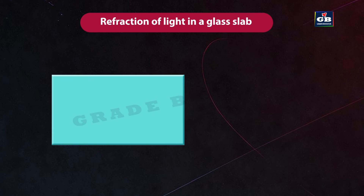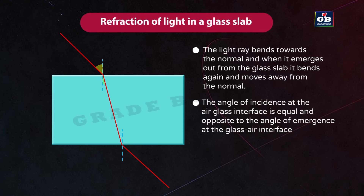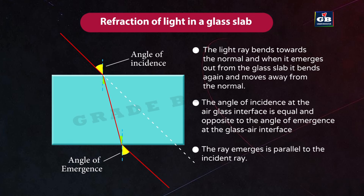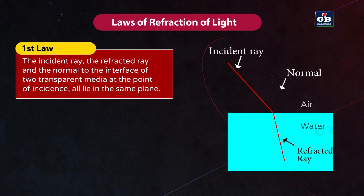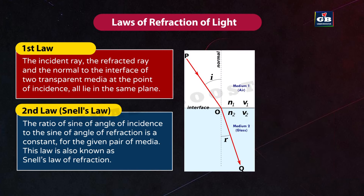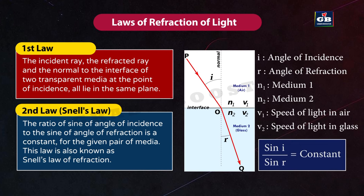Refraction through a rectangular glass slab: when a light ray passes obliquely through one side, it bends towards the normal; when it emerges from the other side, it bends away from the normal. The angle of incidence at the air-glass interface equals the angle of emergence at the glass-air interface, so the emergent ray is parallel to the incident ray. Laws of refraction: (1) the incident ray, refracted ray, and normal all lie in the same plane; (2) the ratio of sine of angle of incidence to sine of angle of refraction is constant — this is Snell's law: sin i / sin r = constant.